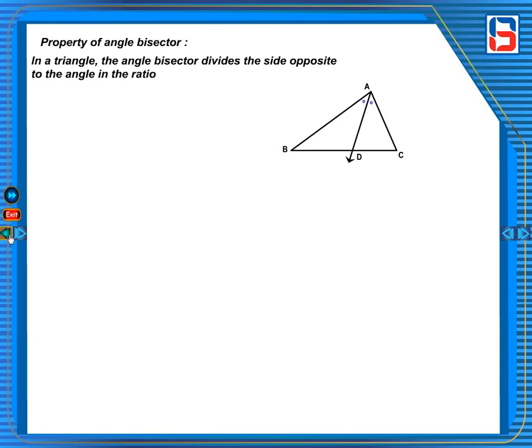Given: AD is a bisector of angle BAC of triangle ABC.